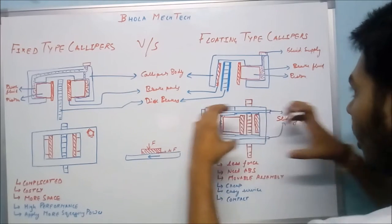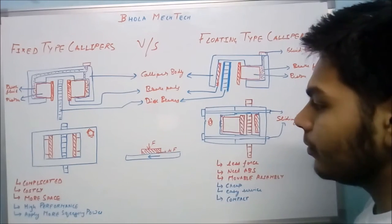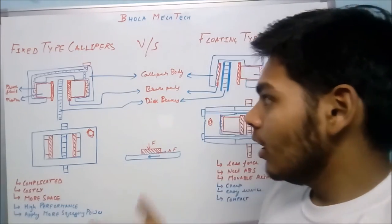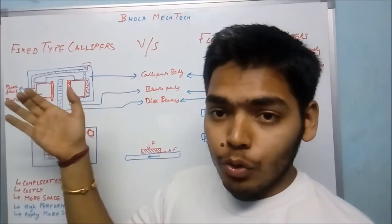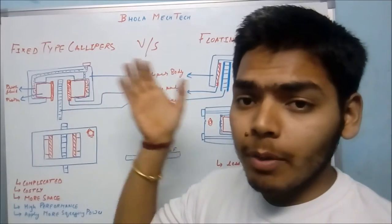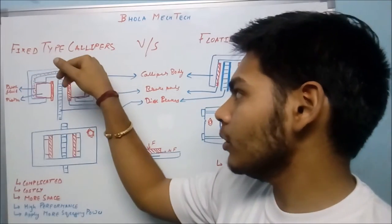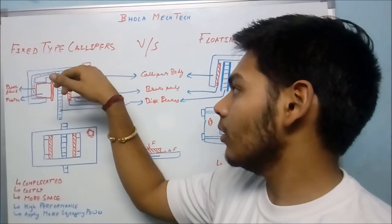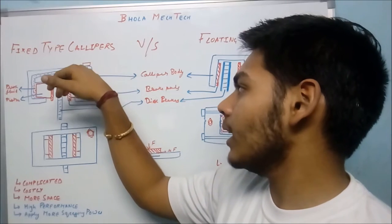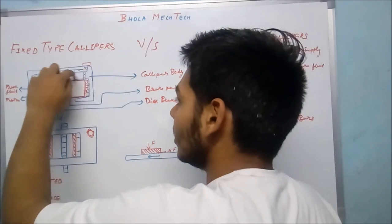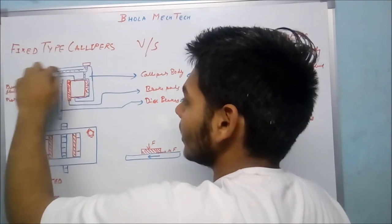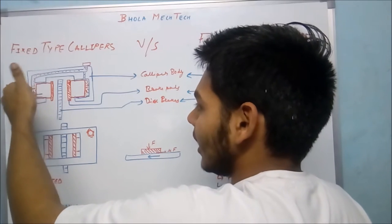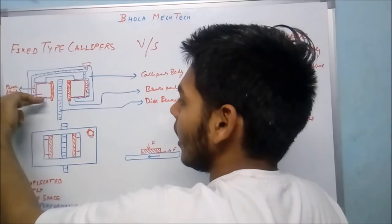Coming to the functioning of the fixed type caliper: when the pressurized fluid from the tandem master cylinder comes through this screw, which has a cavity inside, the pressurized fluid comes inside these cavities and moves into the piston cavity.